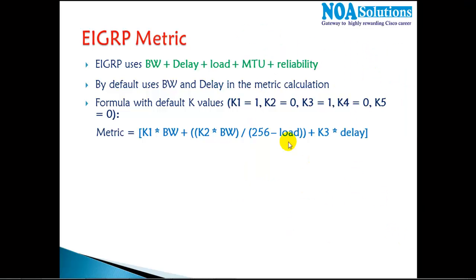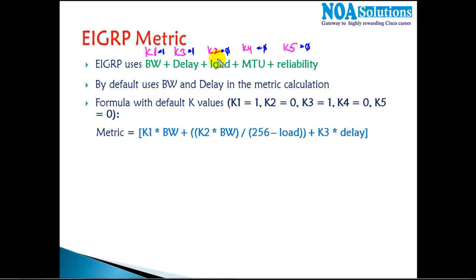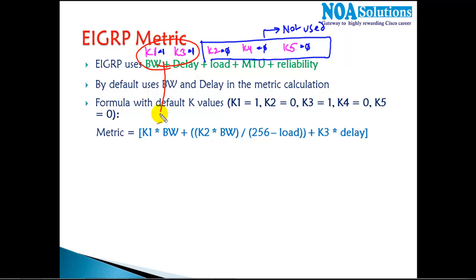These five values used in metric calculation are technically called K-values by Cisco: K1 (bandwidth), K2 (load), K3 (delay), K4 and K5 (reliability/MTU). By default, K1 is 1, K3 is 1, and the remaining K-values are 0. When a K-value is 0, that factor is not used in the metric calculation. So only K1 and K3 — bandwidth and delay — are active by default.